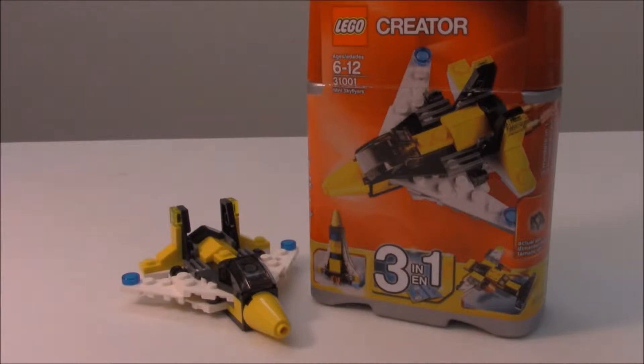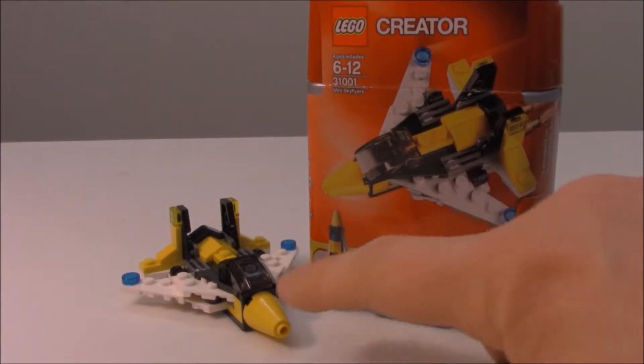This one is of set 31001 Mini Sky Flyers. It is a 3-in-1 LEGO Creator, where you can build the jet that's on the cover, which is what we have here.